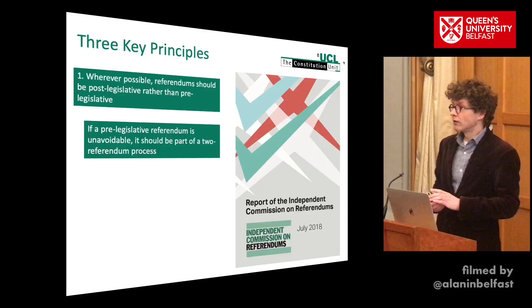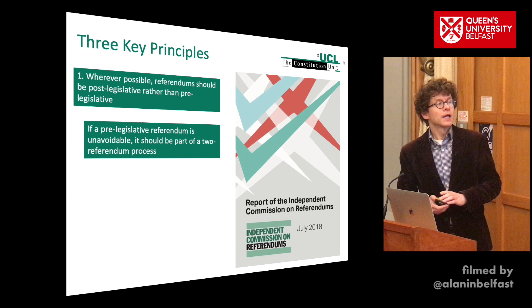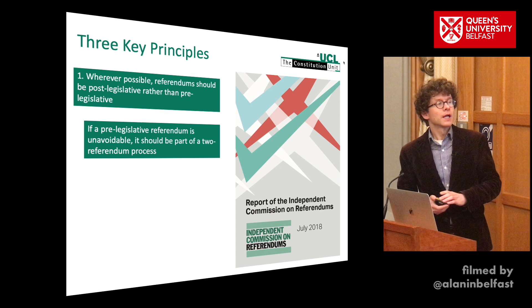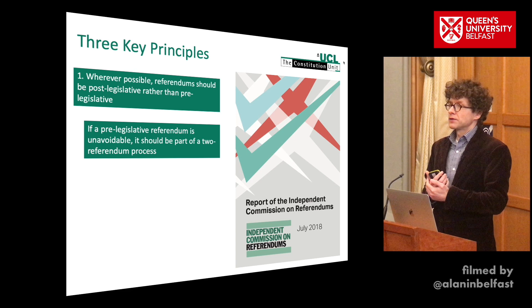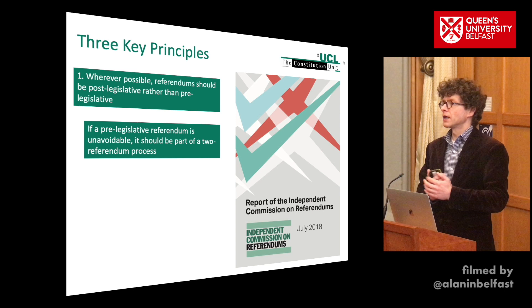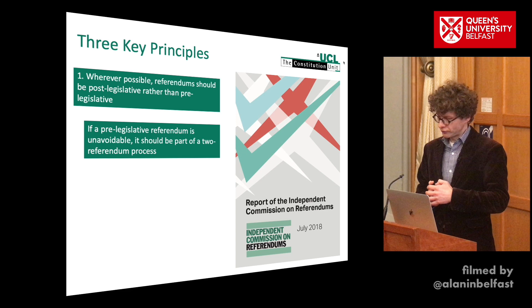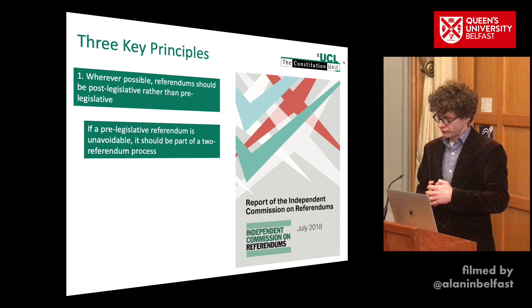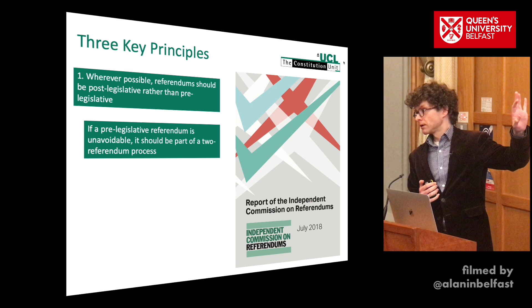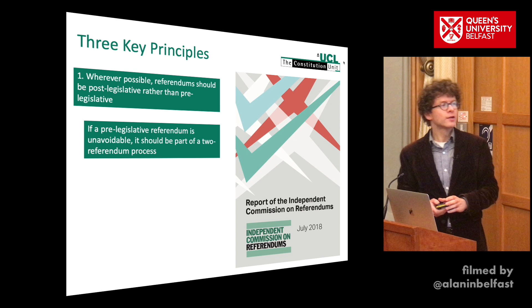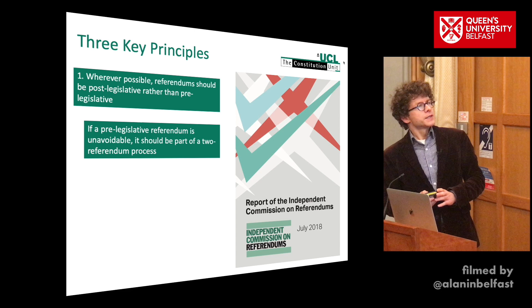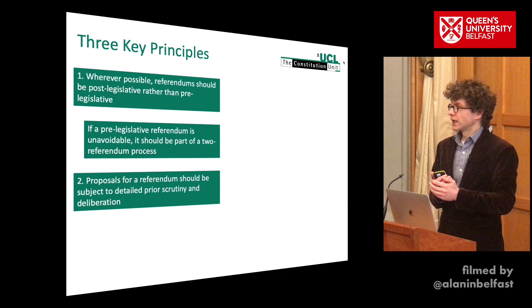This was argued in quite a lot of detail in a report that came out in July 2018. The Constitution Unit convened an independent commission on referendums consisting of leading politicians, people from the media, academia and elsewhere, to look into the future conduct of referendums in the UK. It included leading figures on both sides of the Brexit divide as well as neutrals, and they essentially came to the same conclusion about how to conduct a referendum process. The report is on the Constitution Unit website.